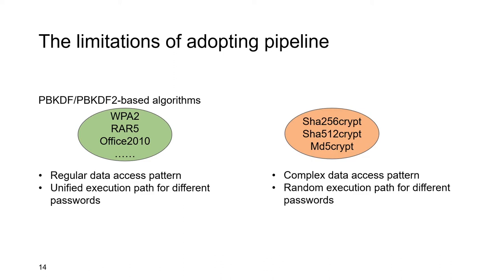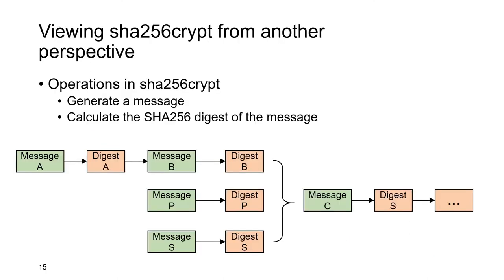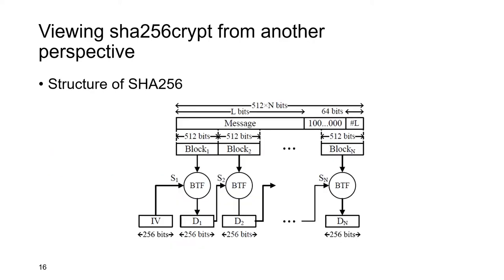However, for some KDFs like SHA-256-crypt, the complex data access pattern and the random execution paths make pipeline scheduling very difficult. To further understand why, let's view SHA-256-crypt from another perspective. The operations in SHA-256-crypt can be classified into two categories: first, we generate a message by some rules; second, we calculate the SHA digest of the message. We also want to review the structure of the SHA function. The input message is first padded with a 1 bit, followed by several zeros, and a 64-bit message length. Then the padded message is divided into several 512-bit blocks.